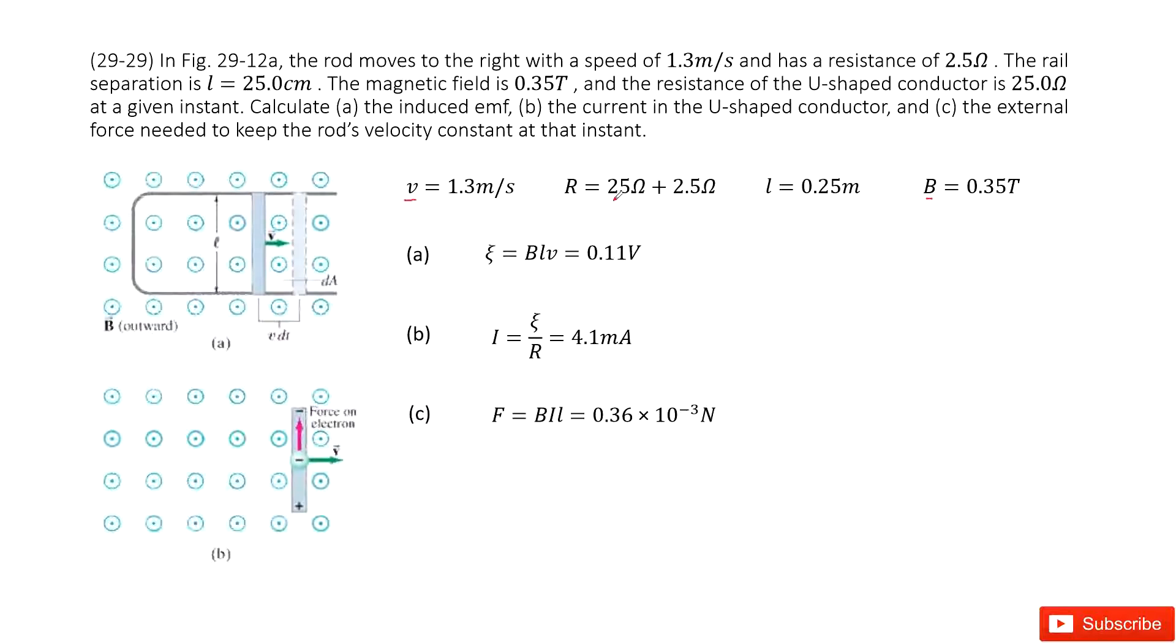We need to consider the resistance of this U-shaped conductor, this part, plus the resistance from this moving bar. So we add these two together.